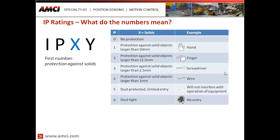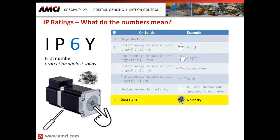Going to a larger number, say four — that item is protected against solids larger than one millimeter. A practical example would be a falling wire: if you're wiring up your cabinet, cut a piece of wire, and it flies somewhere, if it went near an item with a protection level of four, you can be sure that wire didn't fall inside that enclosure. These definitions make it very clear what we're talking about. Numbers five and six provide dust protection — limited entry at five, meaning any dust that does get inside will have no interference with operation, all the way to IP six, which is fully dust-tight.